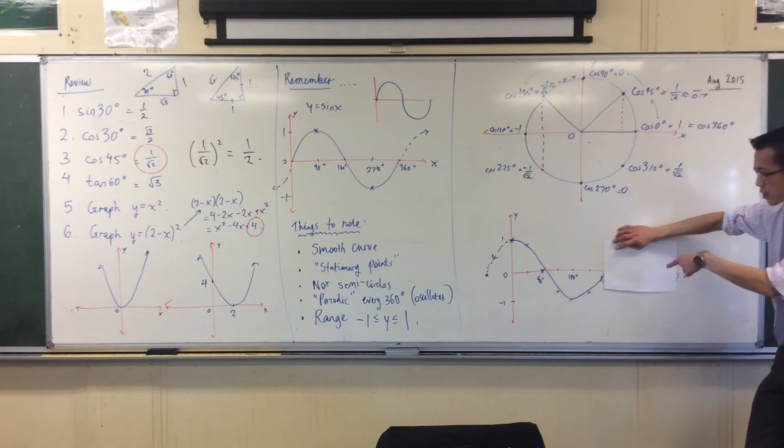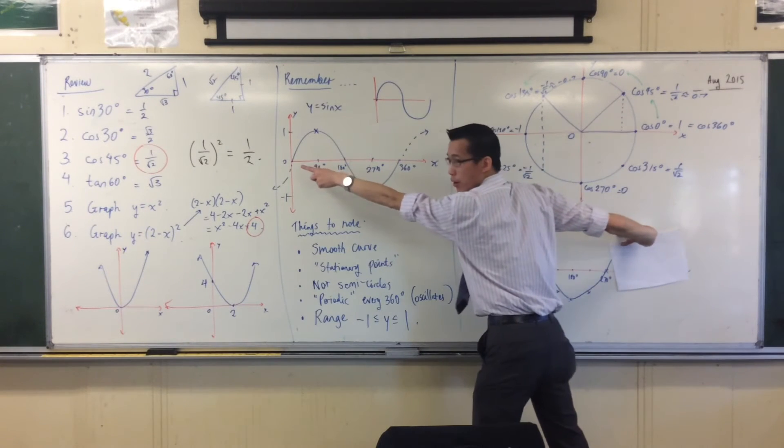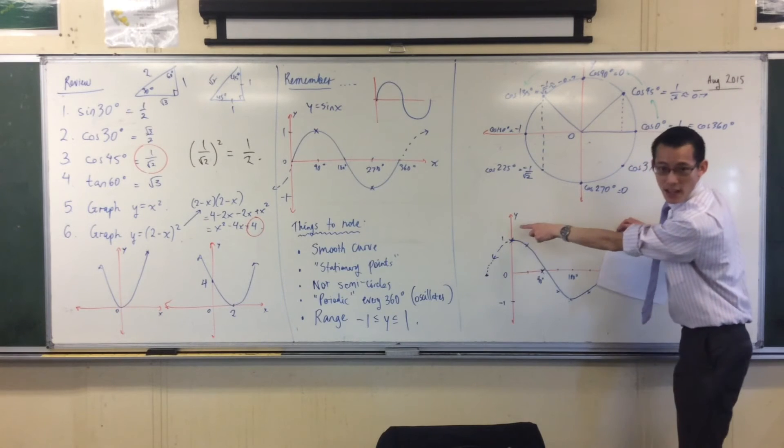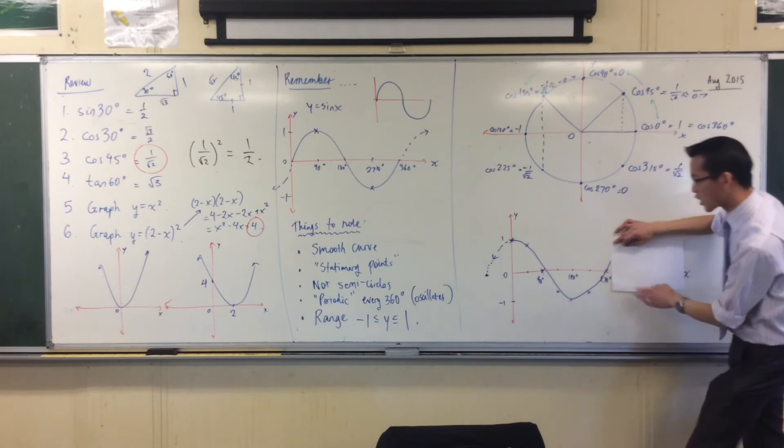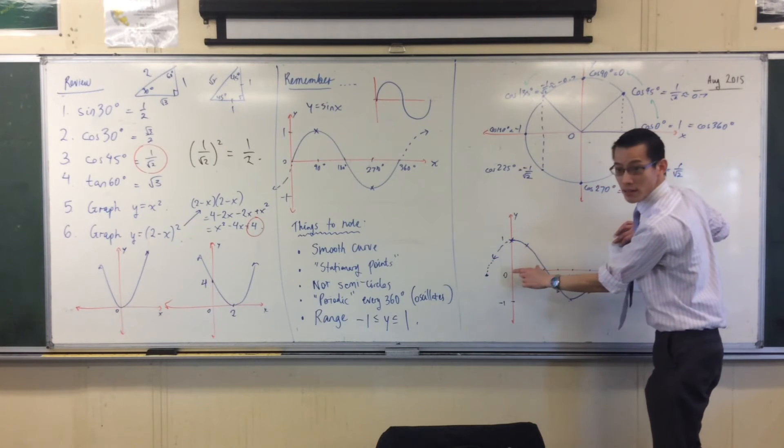What's the difference between this graph and that graph? It starts when we already know. Yeah, that's right. That guy starts at zero, but this guy starts up the top. If you like, he's kind of been moved over. I moved him over 90 degrees. You see that? 90 degrees.